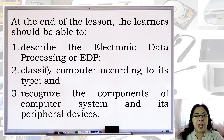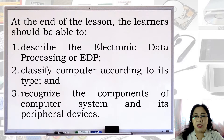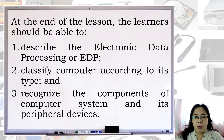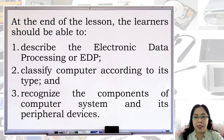At the end of the lesson, the learner should be able to: 1. Describe the electronic data processing or EDP. 2. Classify computers according to their type. 3. Recognize the components of a computer system and its peripheral devices.